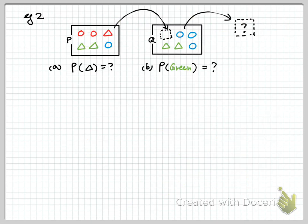So let's take a look at one more example for dependent events. It is similar: you have boxes P and Q. We pick one item from P to Q, mix it up, and pick another from Q. But now, in addition to color, we have shapes. In P, we have two red circles, one red triangle, two green triangles, and one blue circle. In Q, we have two green triangles and three blue circles. The question is: what is the probability the picked item is a triangle or is green?